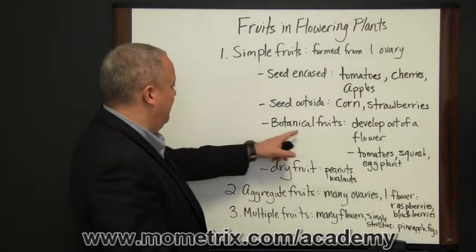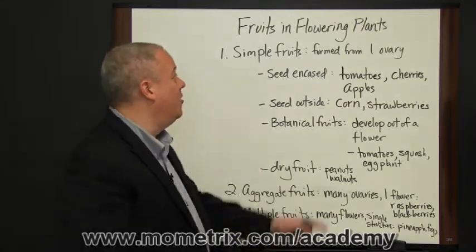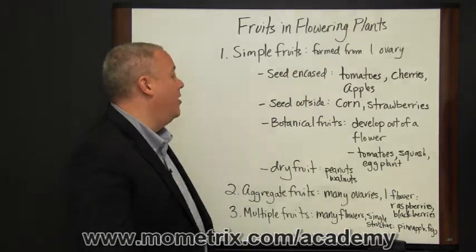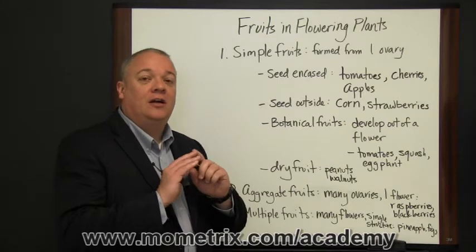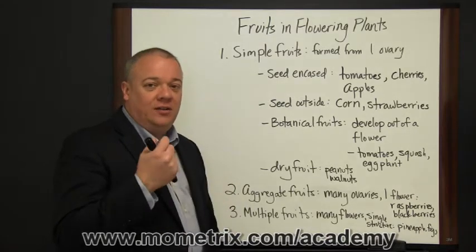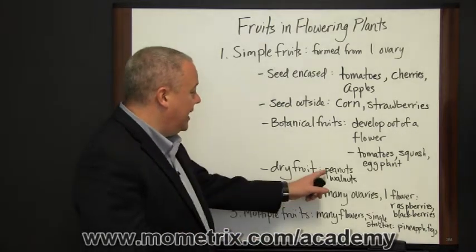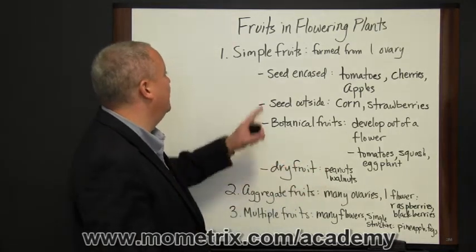Actually, botanical fruits is not the last one. The last one we want to talk about is dry fruits. Also from simple fruits formed from one ovary, you can get dry fruits. This basically means the one ovary, the outer layer of it hardens around the seed, and you get things like peanuts and walnuts in this category.